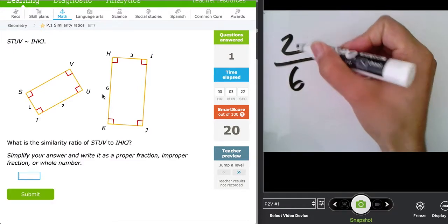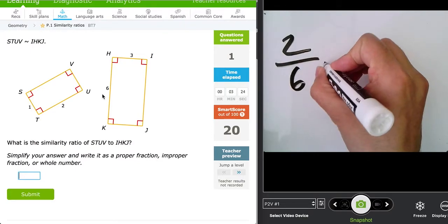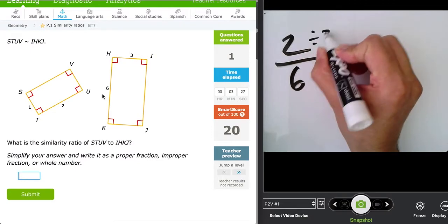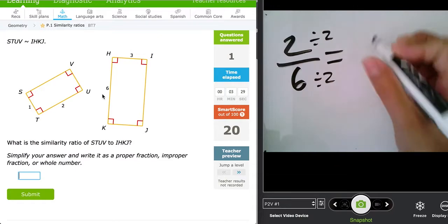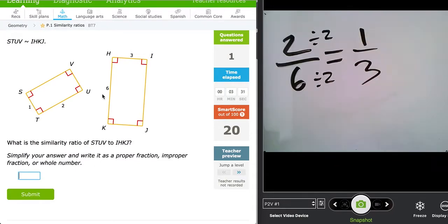We're comparing length to length. So 2 compares to 6. If we reduce this we can divide both values by 2 which leaves us with 1 over 3. Therefore our simplified ratio is 1 to 3.